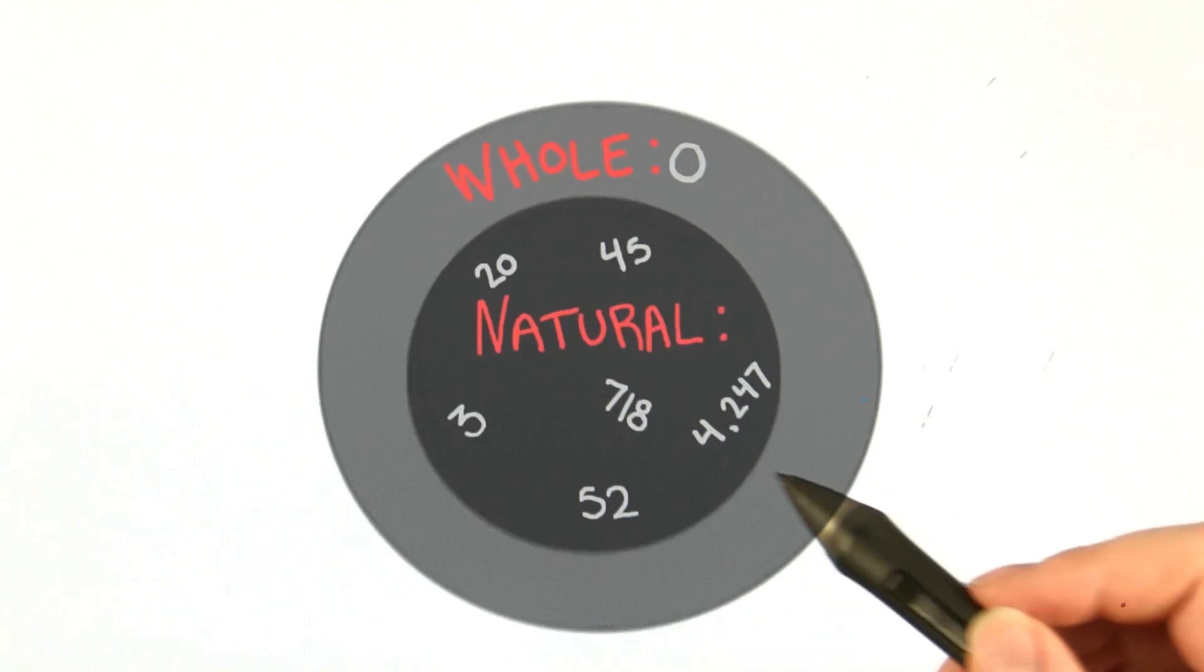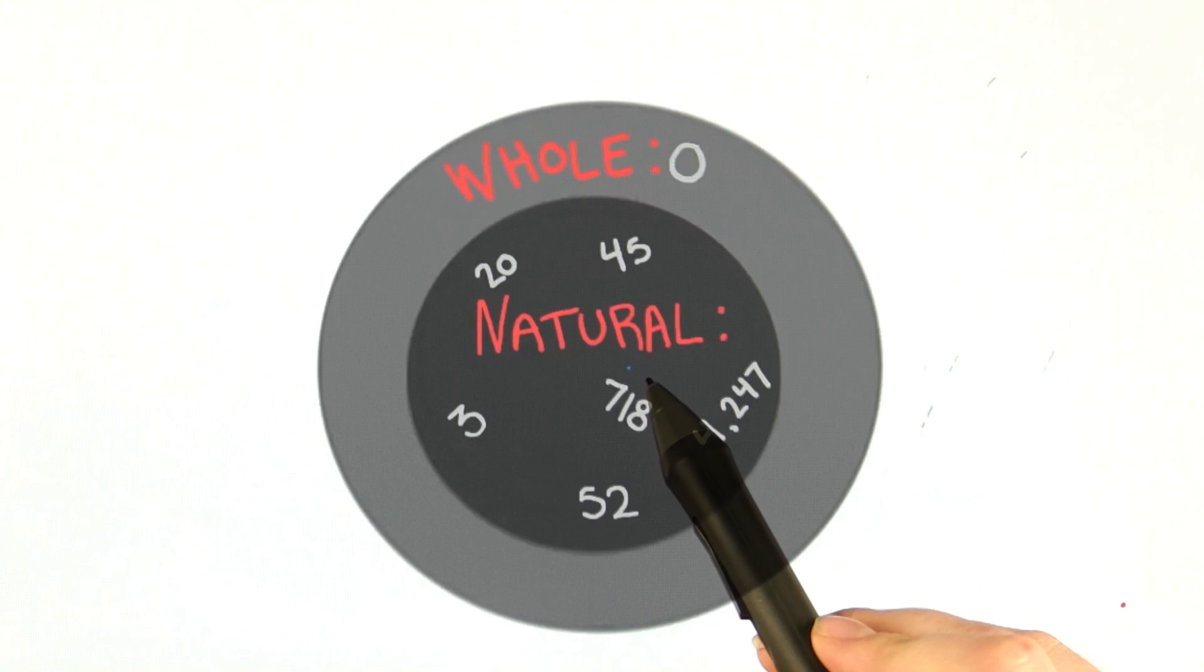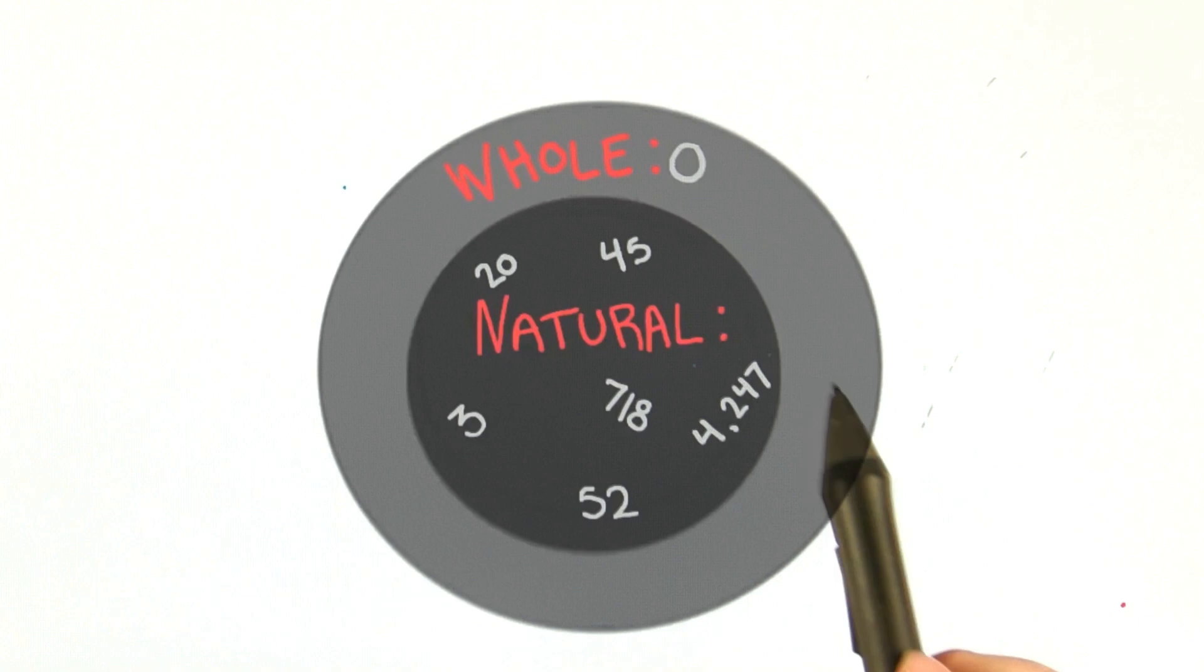So you can see how this diagram that I drew earlier works. The circle representing the natural numbers is within the circle representing the whole numbers, showing that the natural numbers are all included in the whole numbers.